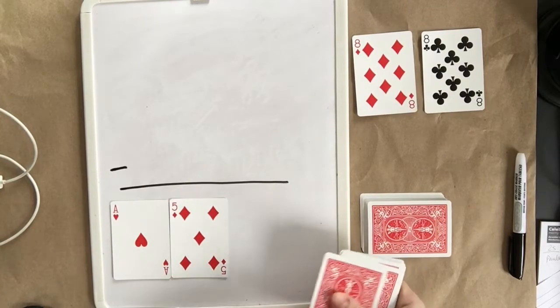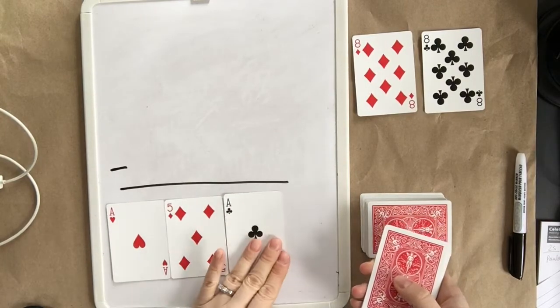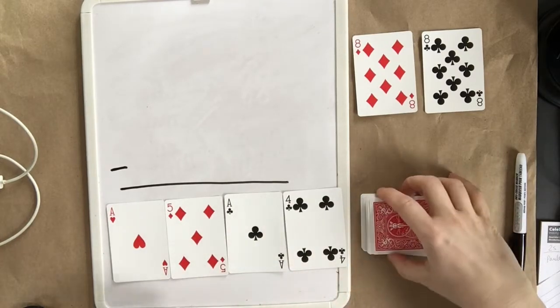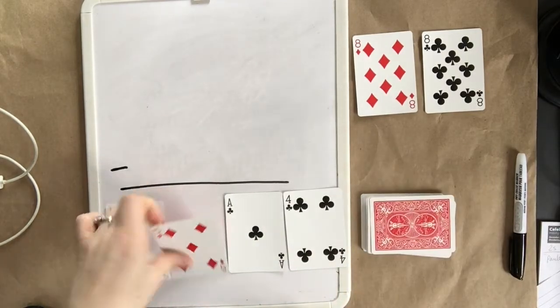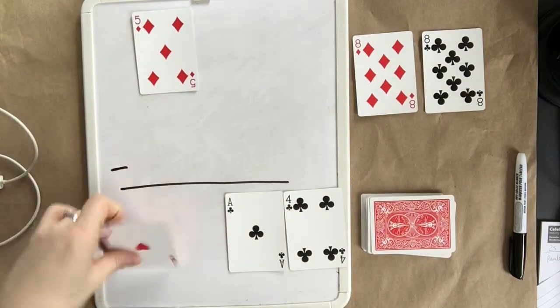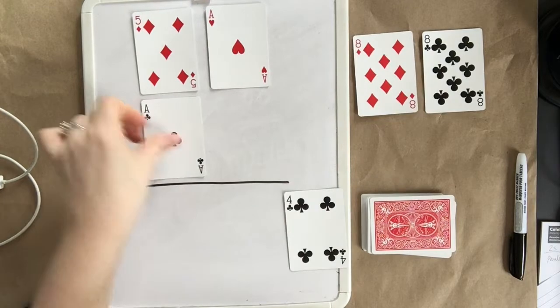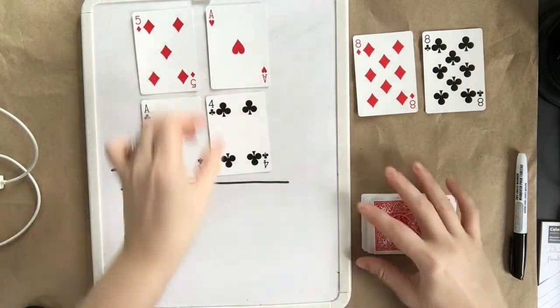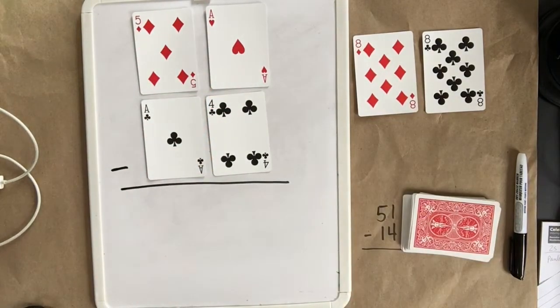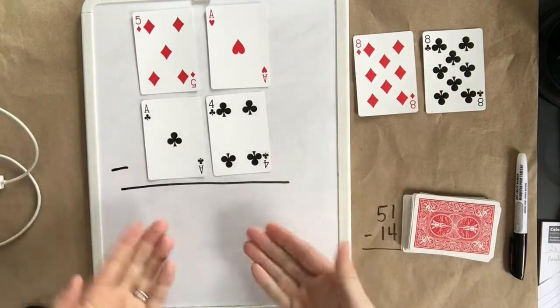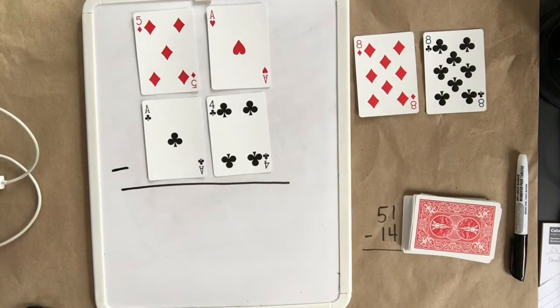You'll see I've got an Ace which is 1, 5, another 1, and a 4. Make sure to choose a larger number and then a smaller one to go underneath because we are subtracting. For this I've chosen 51 and 14. 51 take away 14. 51 take away 14 equals? We're not sure yet.